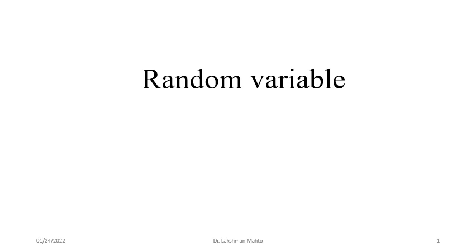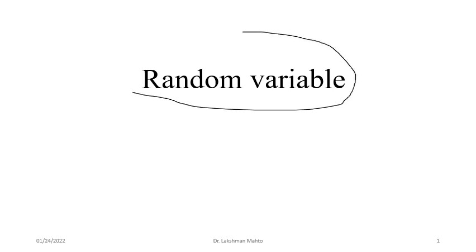Let's discuss in detail about random variable. A random variable is a function — it is one kind of numeric quantification of outcome. The outcome might be of any nature, but when you quantify every outcome of a sample space into a number, that process or function or rule is what we are calling a random variable. We need to identify the source of randomness, because it is a function from a sample space to real numbers.